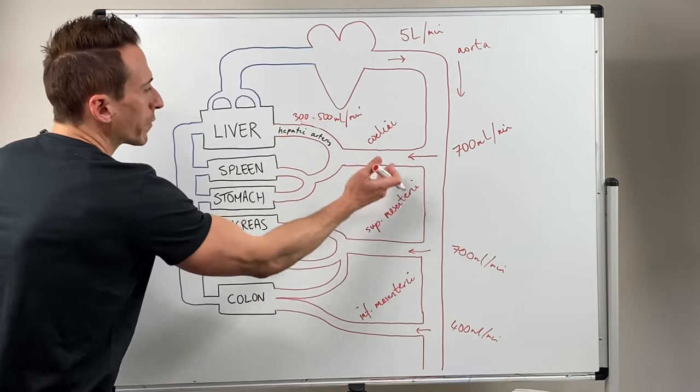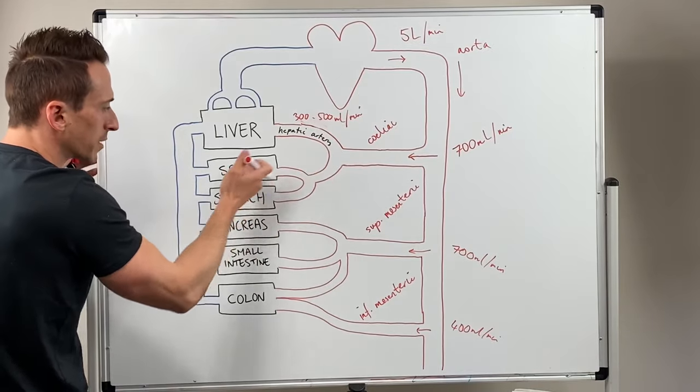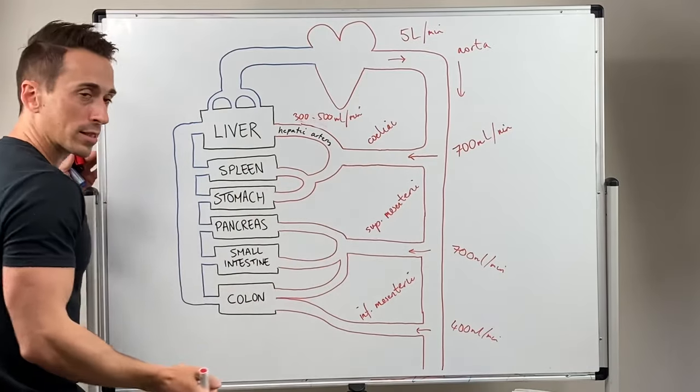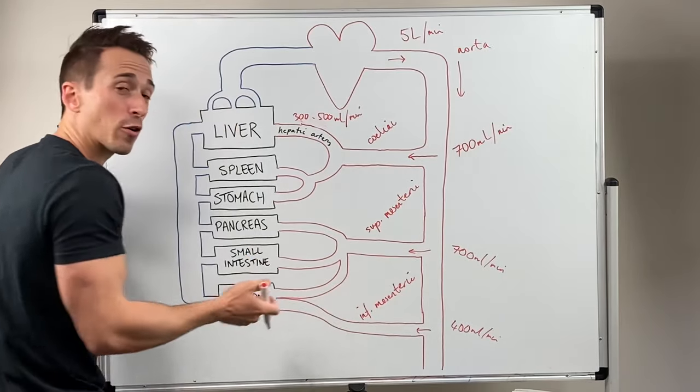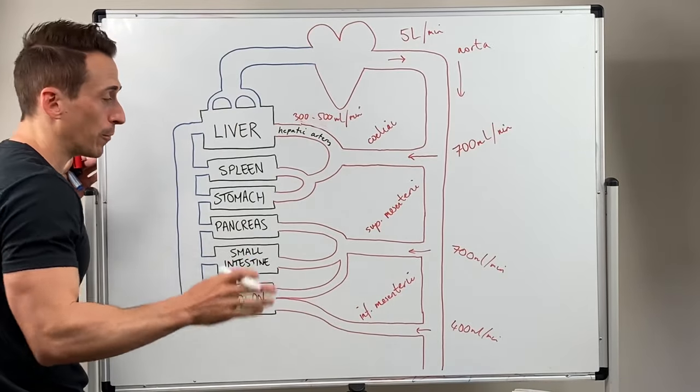And as you can see, we've got part of the celiac going to feed the spleen and the stomach, superior mesenteric to pancreas, small intestines, part of the colon and the inferior mesenteric, part of the colon as well.